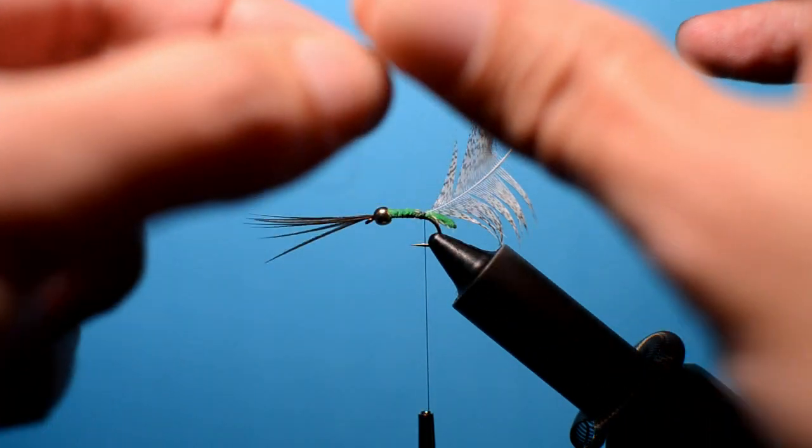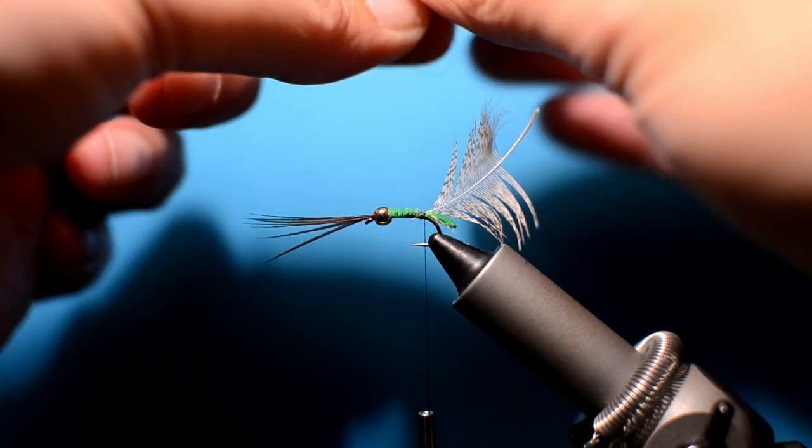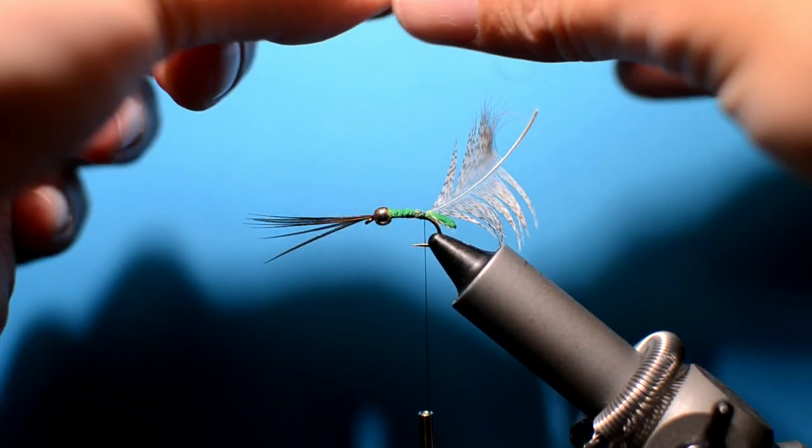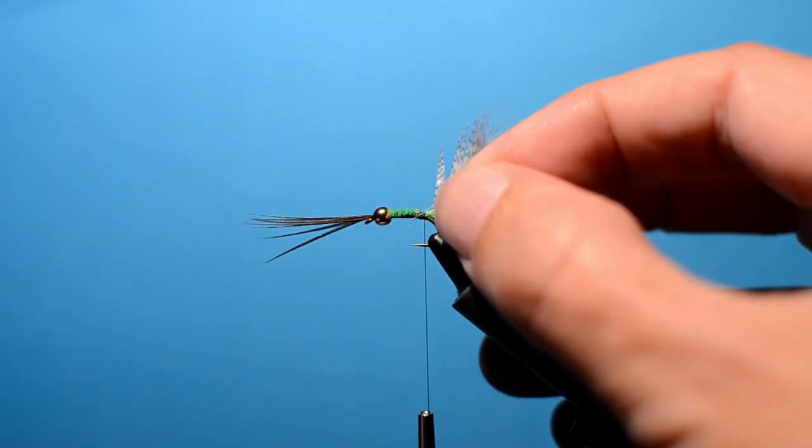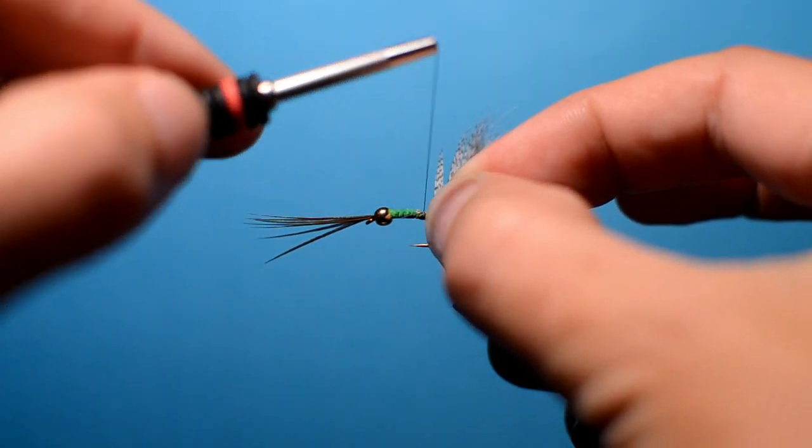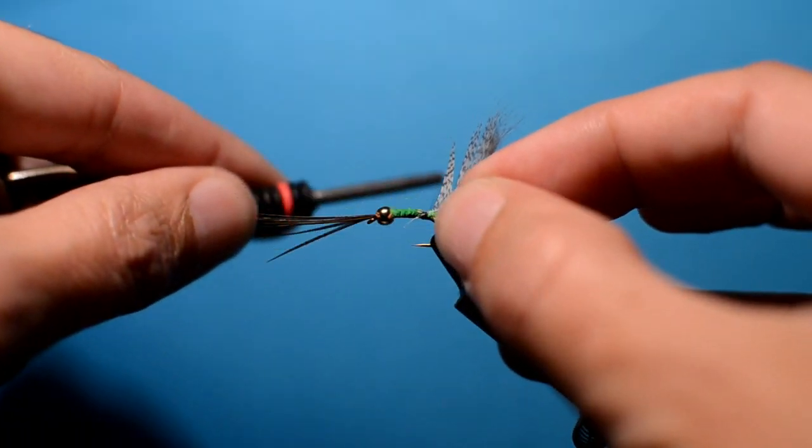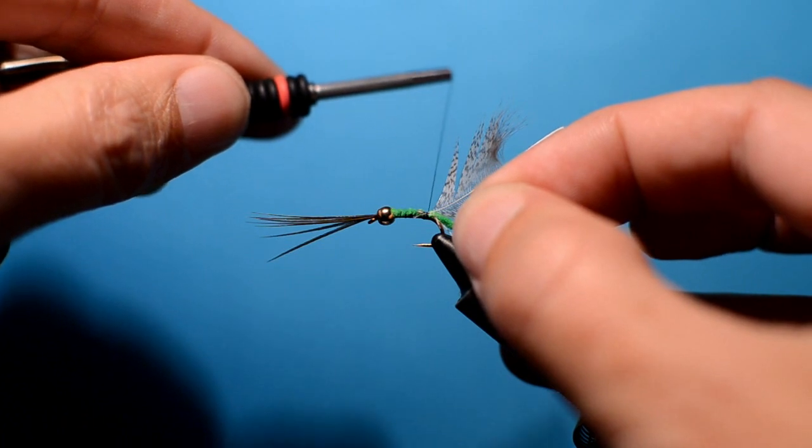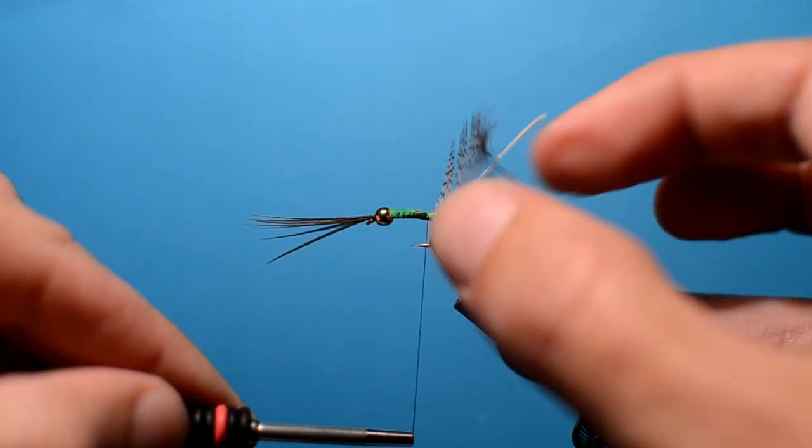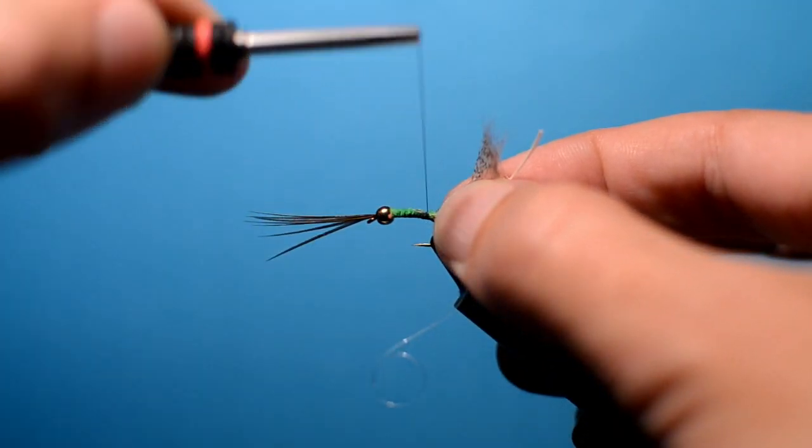Now for a rib, what I've got is just some two-pound mono, just some offcuts. And what we're going to do is just going to catch that in at that point. Pull it back a little bit so again everything is in opposite the barb.